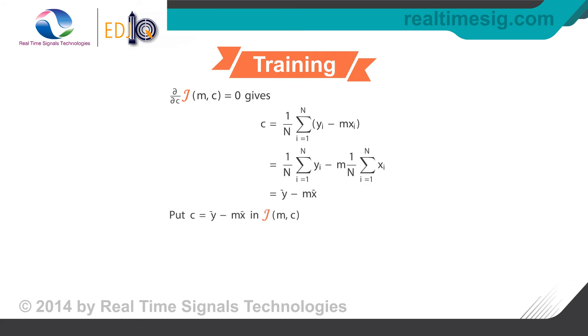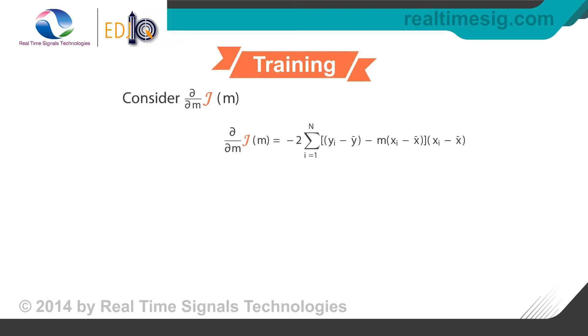Substituting c back in the expression for the cost function reduces the cost as a function of m only. Taking the derivative of the modified cost function with respect to m and finally equating it to zero gives the final expression for m.